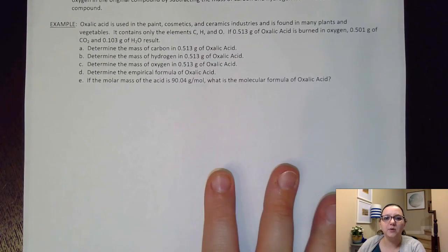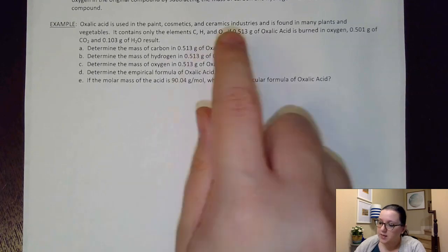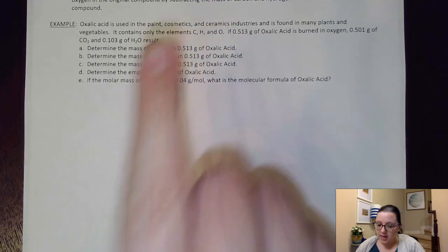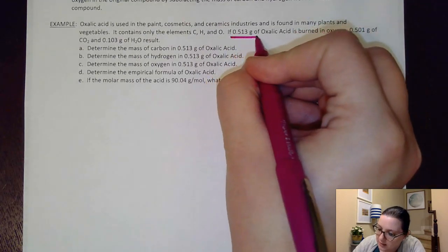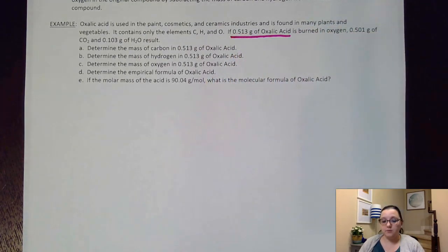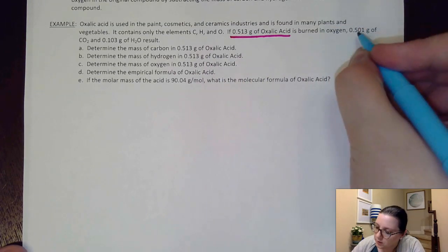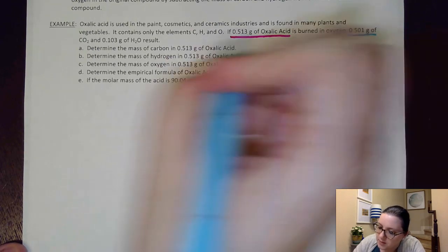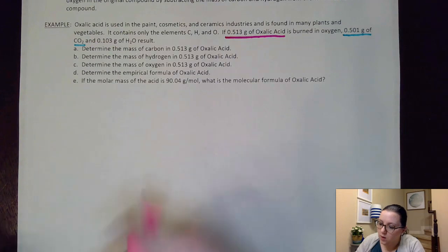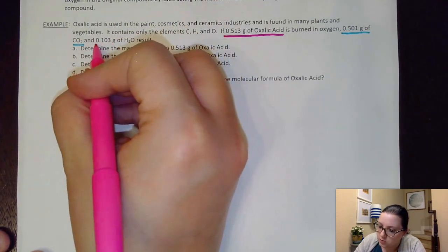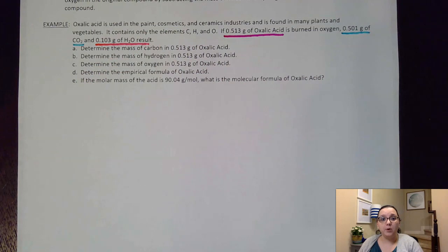So it says here, we're going to be using oxalic acid. It contains carbon, hydrogen, and oxygen. And what they give us here is the grams of oxalic acid that we have. So the grams of the entire compound that we're reacting. And they tell us that we're going to have 0.501 grams of CO2 as well as 0.103 grams of H2O that result from that burning process. And so what I'm going to do is I'm going to kind of start to lay out that information.